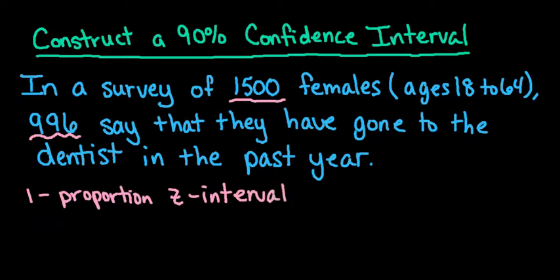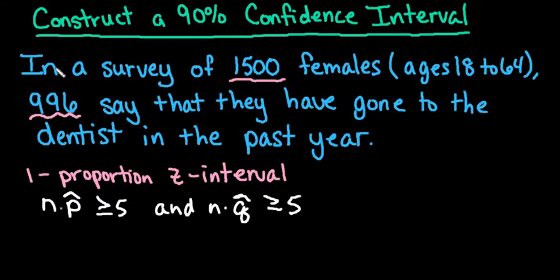So for this one, the condition that must be met in order for the central limit theorem to kick in is that n times p-hat, which is also known as the number of successes, has to be greater than or equal to 5. And n times q-hat, which is our number of failures, also has to be greater than or equal to 5.